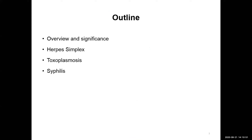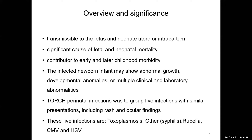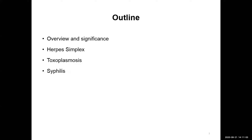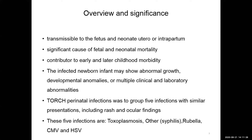That is the outline of the presentation. Why do we need to know about these TORCH infections? The significance is that they are transmissible to the fetus and neonate — antepartum, intrapartum — and there is significant fetal and neonatal mortality, as well as early and later childhood morbidity. The babies may have abnormal growth and clinical abnormalities. The infections we are talking about are toxoplasmosis, syphilis, rubella, CMV, and HSV-2. We will cover the first three today.